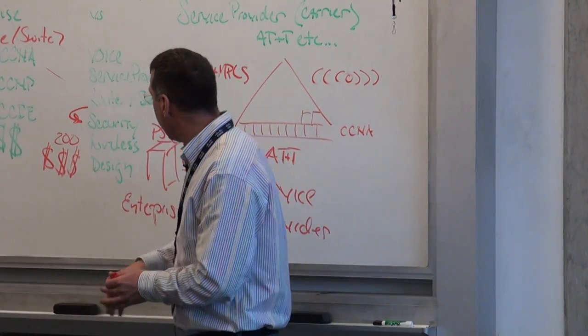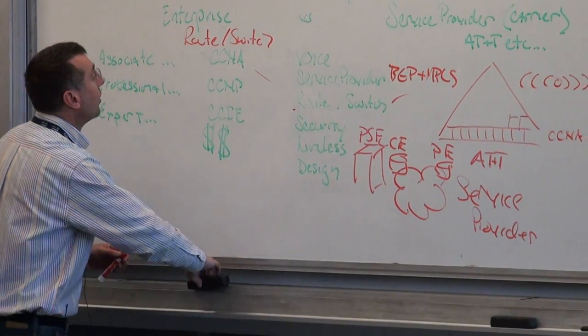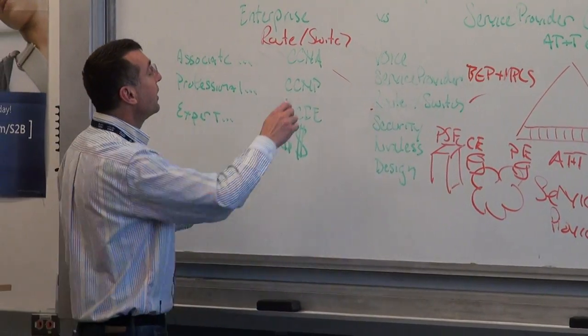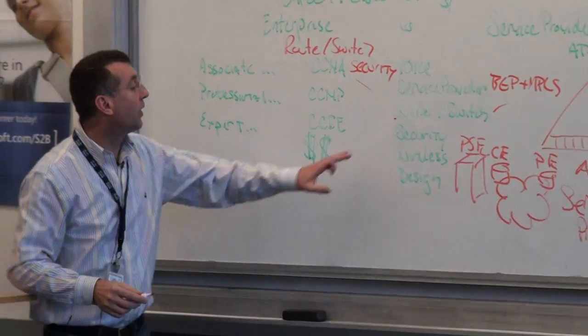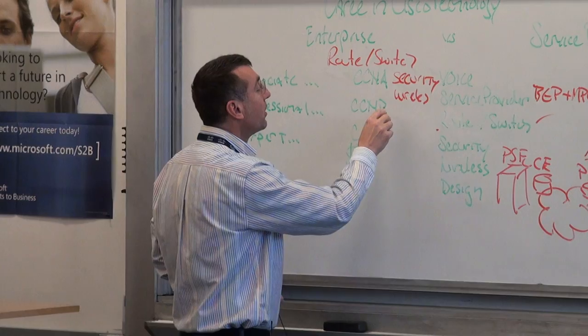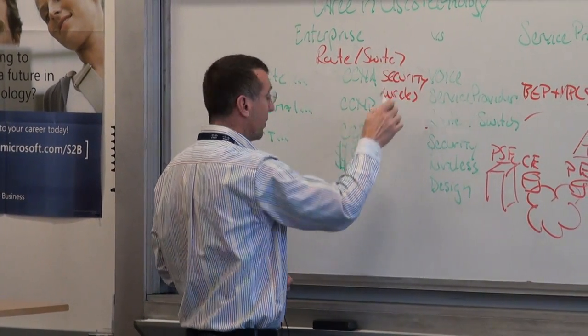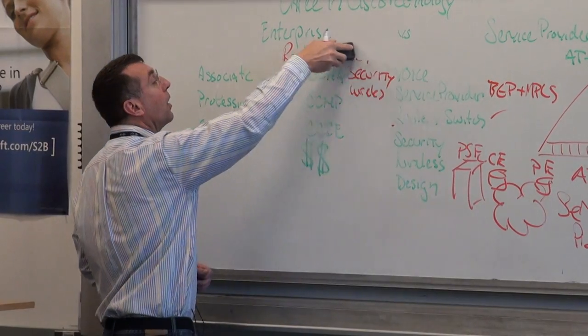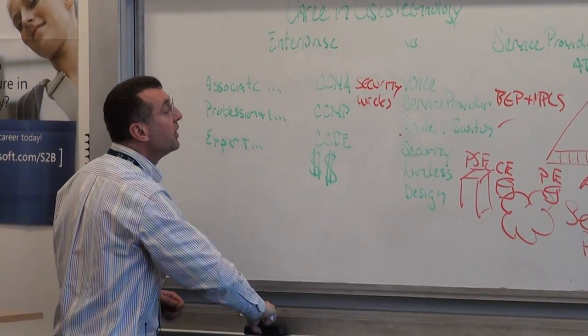So if you really want to think about network security, Cisco network security is the way to go. And just like any of the other tracks, we start with CCNA security. We also have CCNA wireless, CCNA design, what they call CCDA, CCNA voice. So you start with CCNA in any of these tracks.